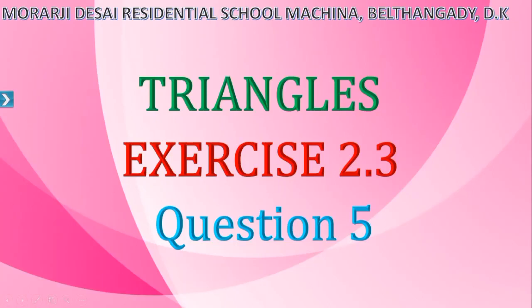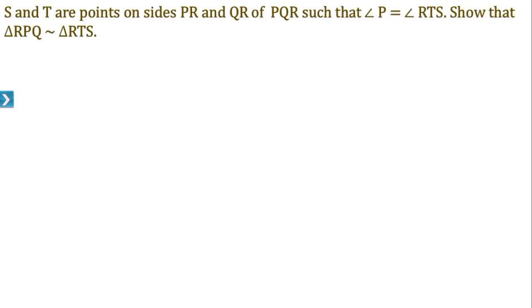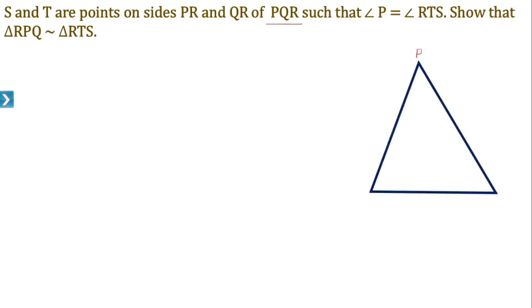Let us solve the fifth question of Exercise 2.3 from the Triangles lesson. S and T are points on sides PR and QR of triangle PQR such that angle P is equal to angle RTS. Show that triangle RPQ is similar to triangle RTS. Since S and T are points on the sides PR and QR of triangle PQR, we have to draw triangle PQR first.